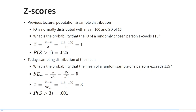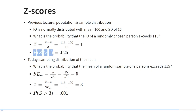We can also use the standard error to calculate z-scores. In the previous lecture, we discussed how you can calculate z-scores for the population and sample distribution. For example, IQ is normally distributed with a mean of 100 and standard deviation of 15. That allows us to calculate the probability that the IQ of a randomly chosen person exceeds 115. To do this, we calculated the z-score: the value x (in this case 115) minus the mean mu, divided by the standard deviation. So that's 115 minus 100 equals 15, divided by 15, giving a z-score of 1. The z-score tells us how many standard deviations this value is above the mean, so a value of 115 is one standard deviation above the mean. Then we can look up in a table or calculate in a spreadsheet the probability of observing a z-score greater than 1.